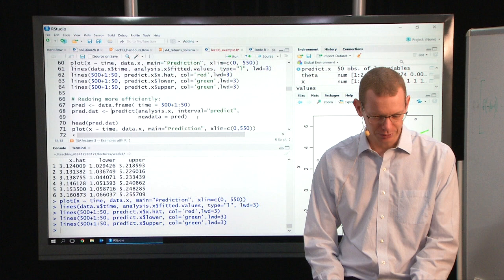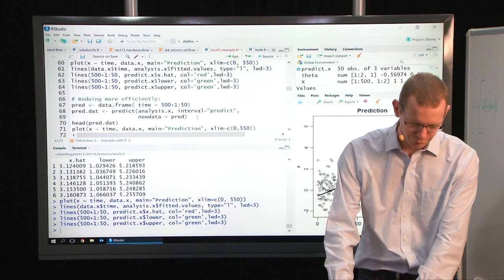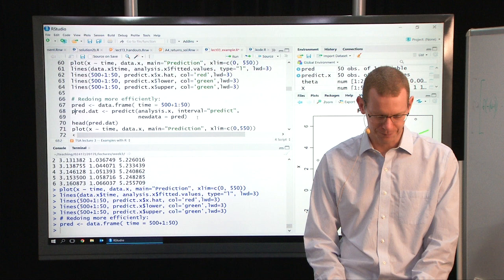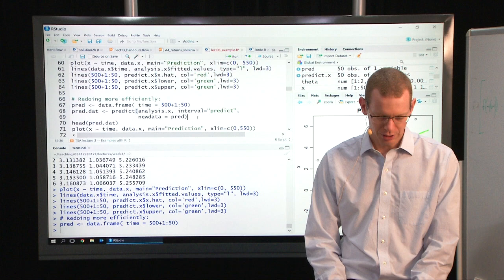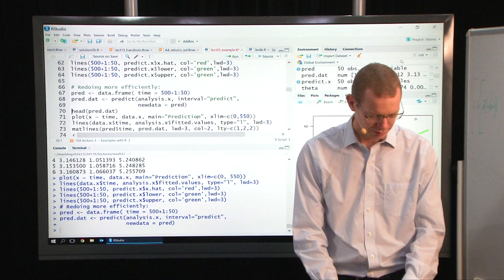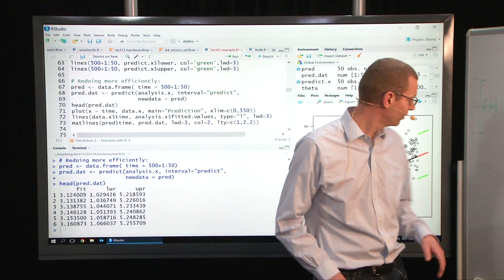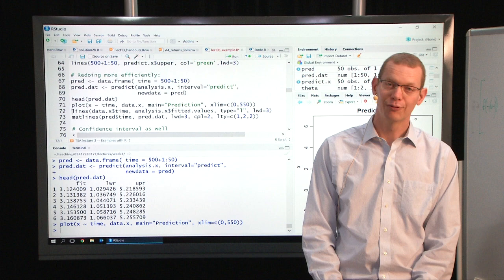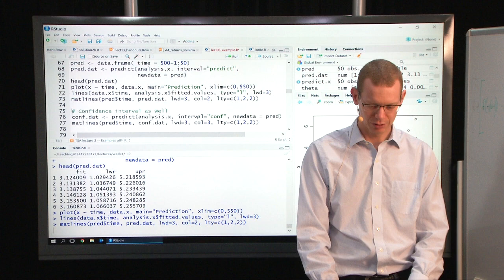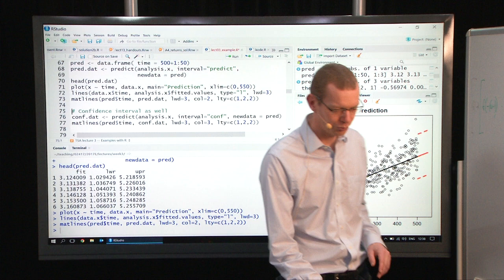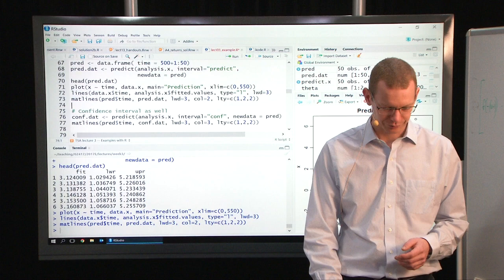What I will do is to just redo the prediction part here more efficiently. We did have a linear model object here. First you make a data frame with the time point where you want to have the predictions made. Then you say that I have the linear model, I want to make a prediction interval, and I want to use this data set for predicting. This here gives me exactly the same numbers as what I got and presented here. To plot the same thing in a more efficient way, first plotting the points, plotting the fitted values, we can do what is called matlines to add a matrix of lines out here.